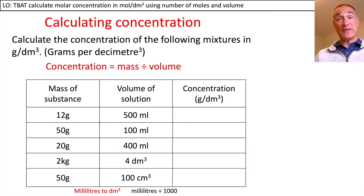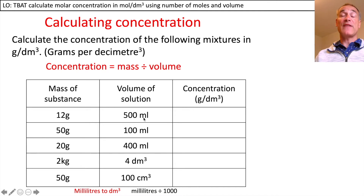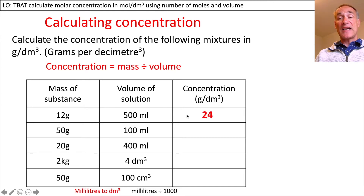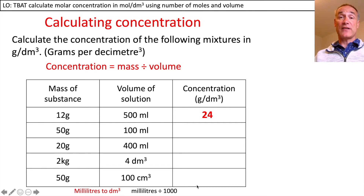I'm going to do one example for you and I want you to then pause the video and do the others yourself. We need to work out the concentration in grams per decimetre cubed. For the first one, we have 12 grams of substance dissolved in 500 millilitres of water, which is 500 centimetres cubed. The concentration will be 12 divided by 0.5, because 500 divided by a thousand is 0.5, so 12 divided by 0.5 is 24.